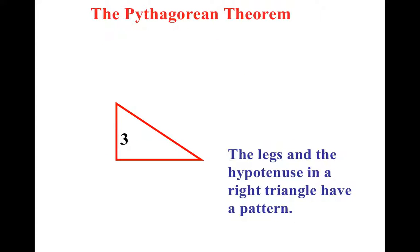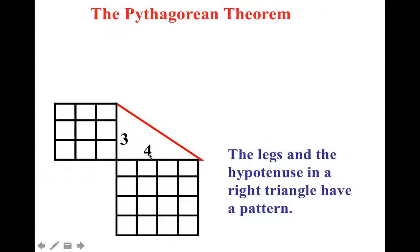So what he found was if he had the legs that were 3 and he made a square off of them, and then he had the other leg that was 4 and he made a square off of that, if he made a square off the hypotenuse, the amount of boxes here plus the amount of boxes here always equaled the amount of boxes there.